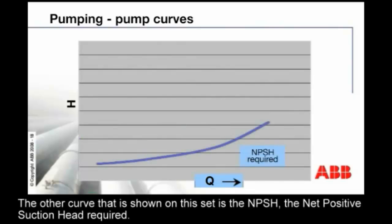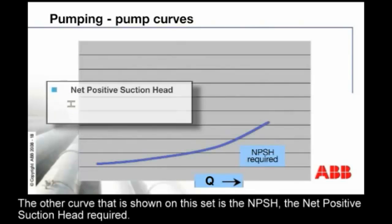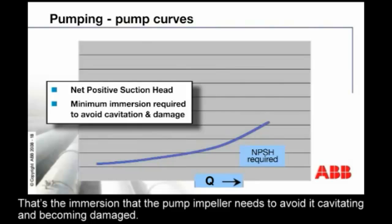The other curve that's shown on this set is the NPSH, the net positive suction head required. That's the immersion that the pump impeller needs to avoid it cavitating and becoming damaged.